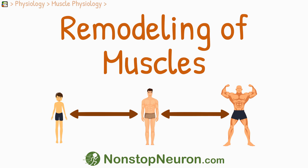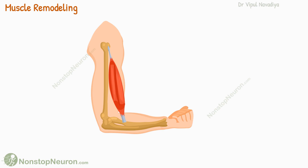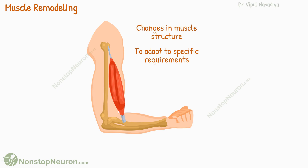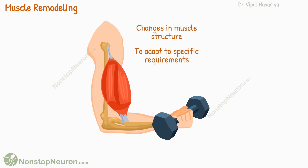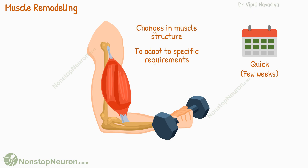In this video we will talk about the remodeling of muscles. Muscle remodeling is basically changes in muscle structure to adapt to the specific requirements placed on them. For example, if we start lifting heavier weights, our muscles will undergo remodeling to become stronger and more efficient. Muscle remodeling can occur relatively quickly, typically within a few weeks, allowing our muscles to adapt in a relatively short period.